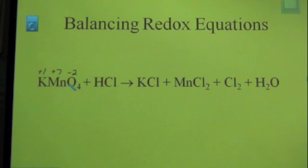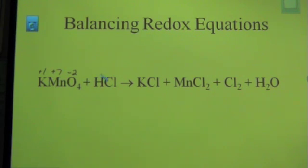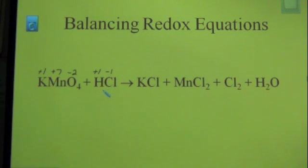Over here for hydrochloric acid: hydrogen is in group 1A so it usually exhibits a plus 1 charge. Chlorine is a halogen — most halogens exhibit a negative 1 charge in many of their compounds. So it's easy to see how that balances out.